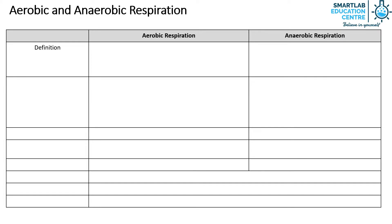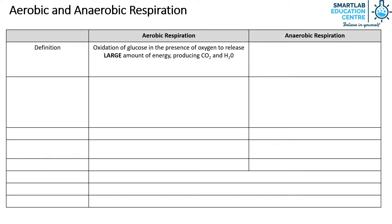Aerobic respiration is defined as the oxidation of glucose in the presence of oxygen to release a large amount of energy, producing carbon dioxide and water. Anaerobic respiration is defined as the oxidation of glucose in the absence of oxygen to release a small amount of energy.